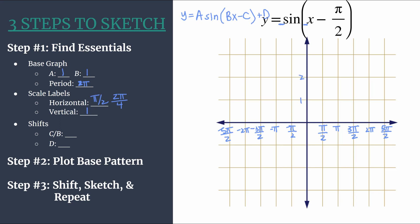Vertically we are counting by one. So we have our axes labeled and now we can move on to the final part of our essential information and that's identifying our shifts.